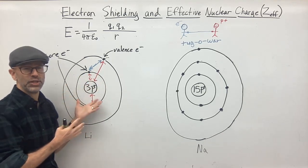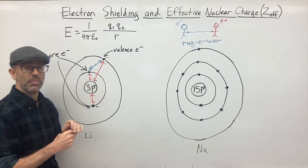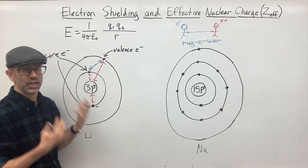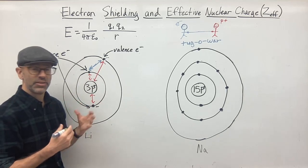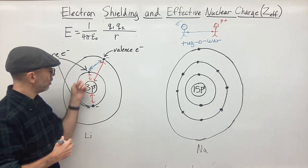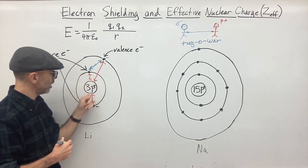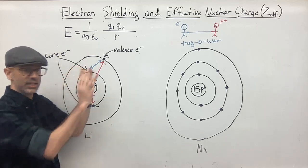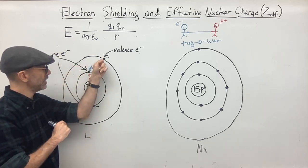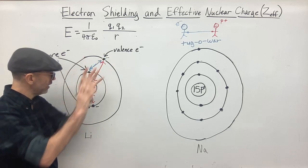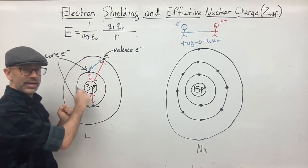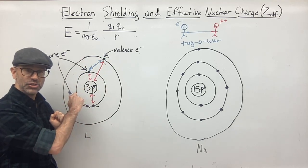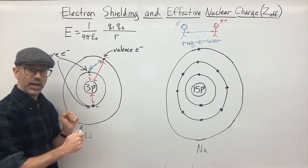So it's not a perfect shielding, but we can simplify it by thinking of it as perfect shielding. If these two electrons are on the inside, they are going to push the electron on the outside away — that's like canceling out one proton each.